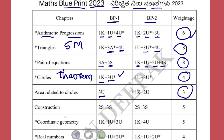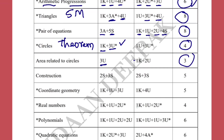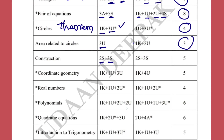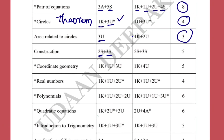Construction will be for five marks: a two-mark question where you get a circle construction, and a three-mark question for construction of a triangle — both are skill-based questions. Coordinate Geometry will come for five marks: one knowledge-based question, one understanding, and a three-mark understanding question. You can expect one question from the distance formula, one from section and midpoint formula, and another from area of triangle.